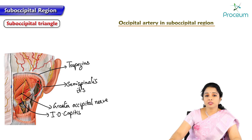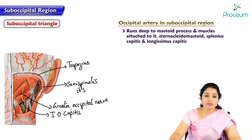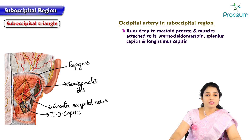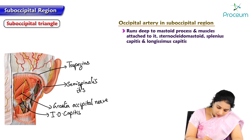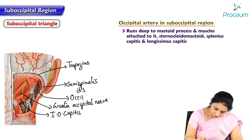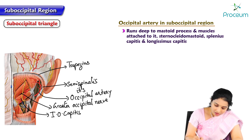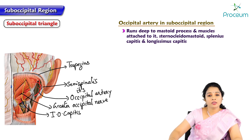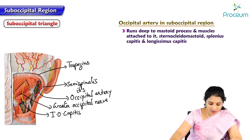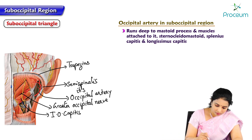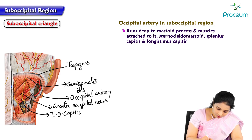Regarding the occipital artery in the suboccipital region: the occipital artery runs deep to the mastoid process and the muscles attached to it. This is the occipital artery, which lies deep to the muscles attached to the mastoid process. The occipital artery is a branch of the external carotid artery. It lies deep to sternocleidomastoid, splenius capitis, and longissimus capitis muscles.